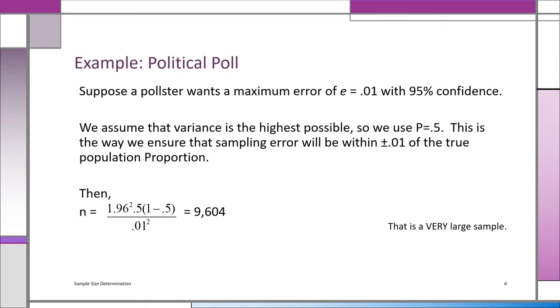In this problem, we have a political poll. The pollster doesn't want the margin of error to be more than 1% with 95% confidence interval. So the variance using the highest possible p is 0.5. We pretend that p is 0.5. It may not be that, but we take the worst-case scenario.